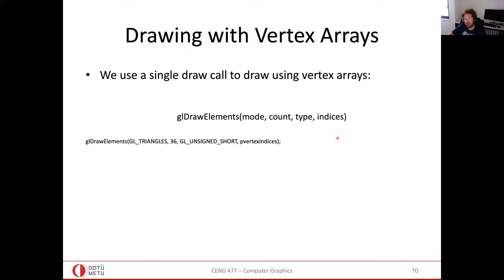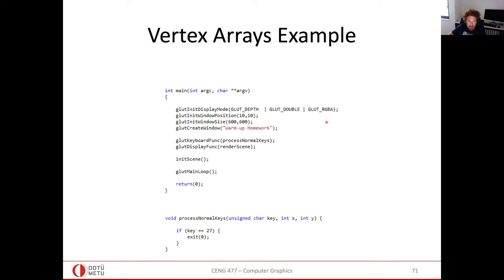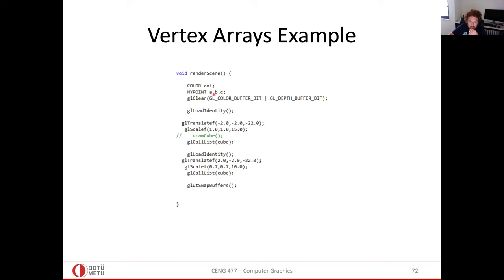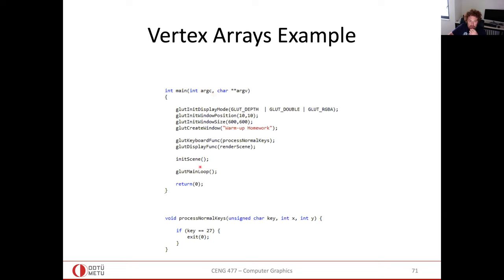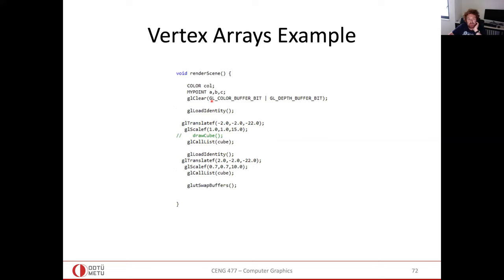However, with client-side vertex arrays, the vertex attribute data is copied from system memory to GPU memory at every draw call, which is again inefficient. A better alternative is Vertex Buffer Objects (VBOs). With VBOs, you do this data transfer only once — the copied data is reused at each subsequent draw call.